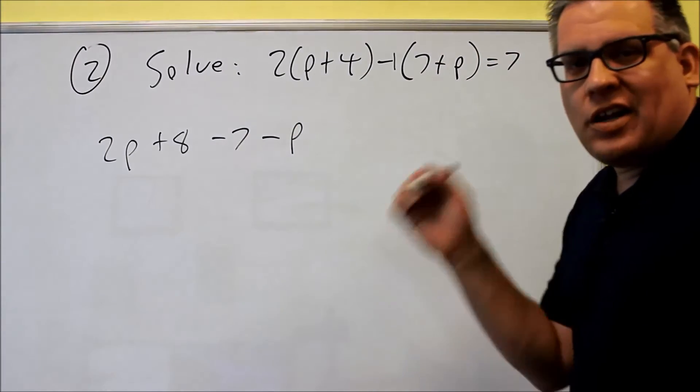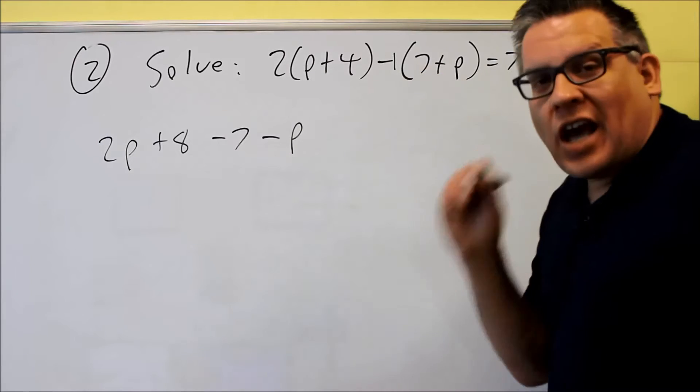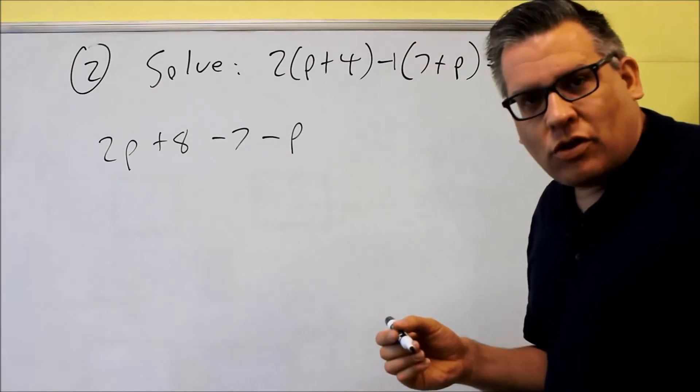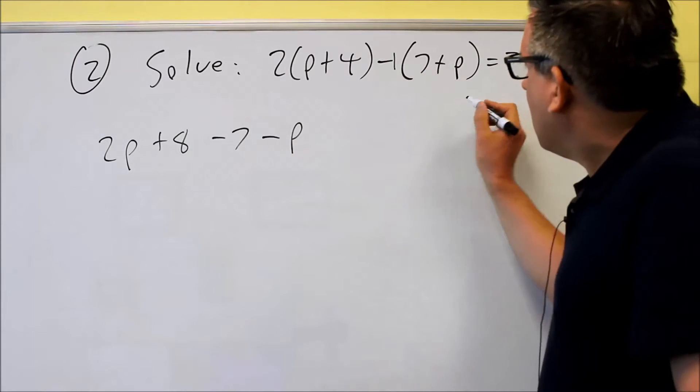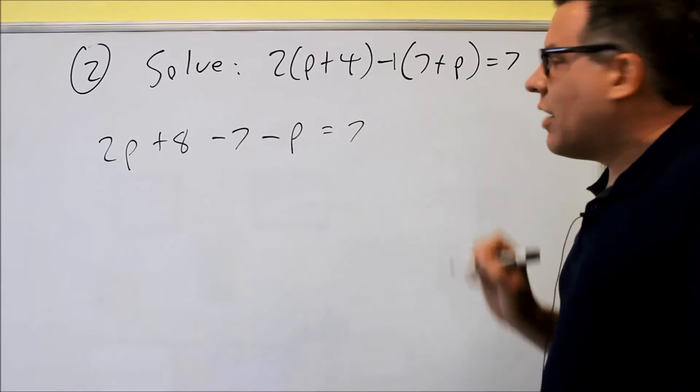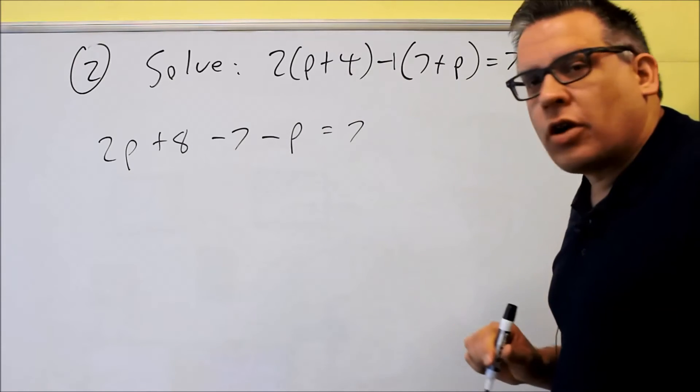Remember, when you multiply a negative and a positive, you get a negative. If you have a negative times a negative, then you'll get a positive out of that. And then we don't do anything with the seven after the equal sign. So we've cleared out the parentheses.